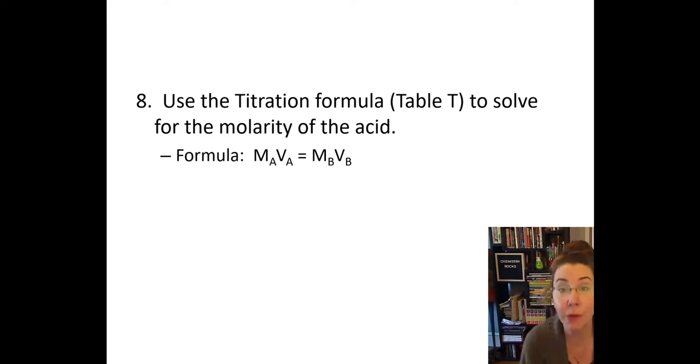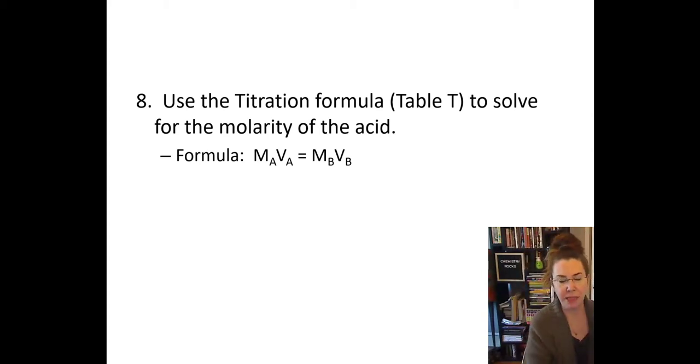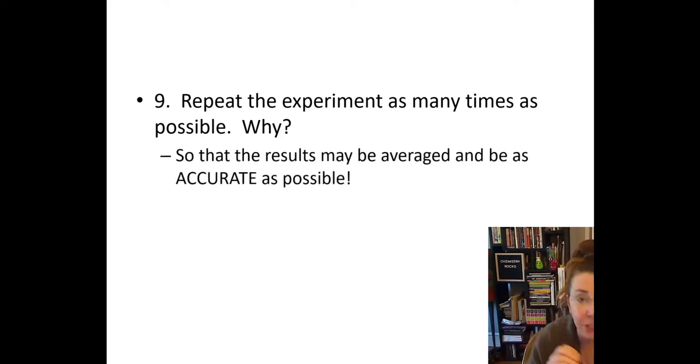Okay. Actually, at this point, I introduced the titration formula, which I'm going to do. So if you turn to table T in your reference table, you will find, remember that's your very back page, right at the bottom, third from the bottom, you've got your titration formula. And that formula is MAVA equals MBVB. And here's what that stands for. Molarity of the hydronium ions times volume of the acid equals molarity of the hydroxide ions times volume of the base. Now, we repeat our experiment as many times as possible. Why? Why would you want to repeat an experiment? And that's so your results can be averaged and be as accurate as possible.